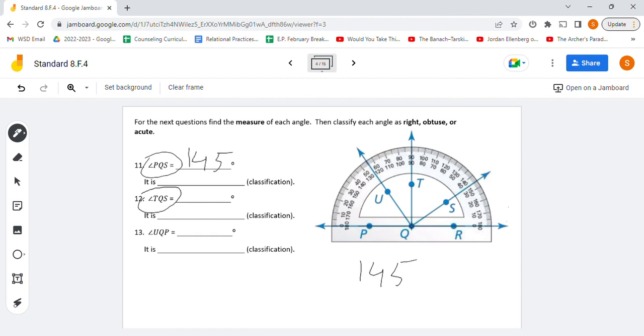Our next angle, TQS. T to Q to S. That one does not sit nicely on the 0 on either side. So we're going to have to use the two numbers and subtract, figure out how far apart they are. So I'm going to use the outside numbers again. We could use either one and it would be fine. We're going from 90 here to 145 there. From 90 to 145, that is a 55 degree angle. So we get 55. And I just did that by 145 minus 90, got us 55.